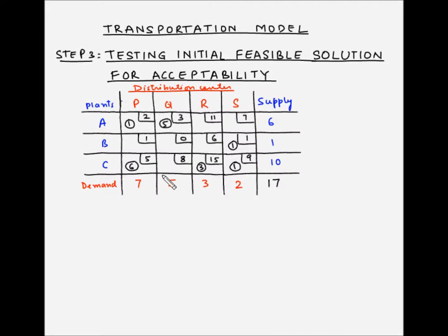Let us look at the third step in solving the transportation model. The third step is testing the initial feasible solution for acceptability. The table on the screen is the initial feasible solution obtained after step 2 using the Vogel's approximation method. This initial feasible solution can be tested for optimality only if it meets the two conditions that we are going to discuss in this video.